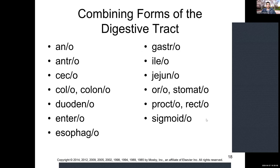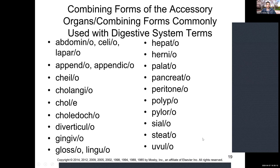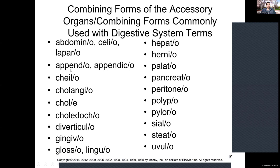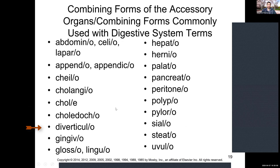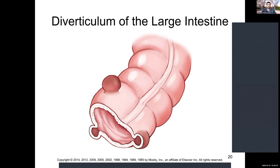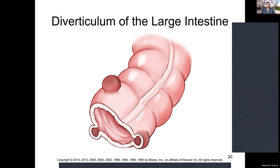Over on page 464 we look at more combining forms. Chilo means lip, which is placed here because the lip is part of the mouth. The cholangio terms relate to the gallbladder and the ducts around it. Diverticulo refers to outpockets of intestinal tissue on the colon — there's a picture on page 464. These diverticula are normal within the colon, but it's common for food to get stuck inside these little pockets.